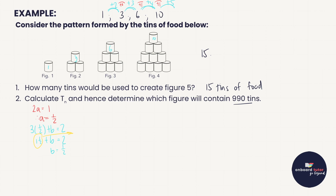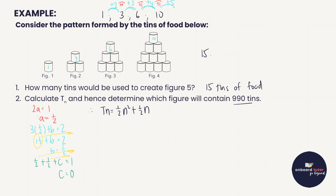For c: a + b + c = term 1, so ½ + ½ + c = 1, giving c = 0. Therefore, Tn = ½n² + ½n. We don't need to write the zero c term.